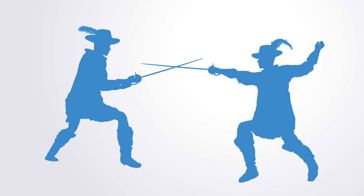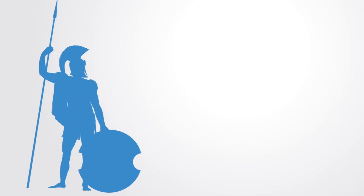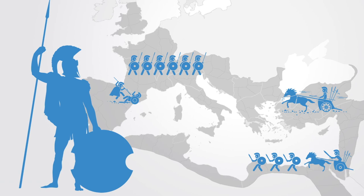When two groups with specific rule sets interact and each wishes to impose its pattern of organization on the other, the result is conflict. Throughout history, the evolution of larger systems of political organization has been associated with conquest — the classical examples being the evolution of large empires like the Incas, the Roman Empire, or the Qin Dynasty in China. In such processes, political organizations come into contact, exert force against each other, and whichever exerts greater force comes to rule over the other.